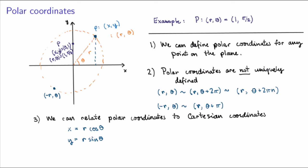Can we go the other way around? If you know Cartesian coordinates, can you get the polar coordinates? Well, if you take the square of both equations and add them up, x² + y² equals r² times (cos²θ + sin²θ), which is just 1, so you end up with r². And if you take the second equation and divide by the first, you get y/x = tan θ. So these two equations together give you a way of getting polar coordinates from Cartesian coordinates. Of course, r and theta are not uniquely defined, but this gives you a way of extracting at least one choice of polar coordinates that works.